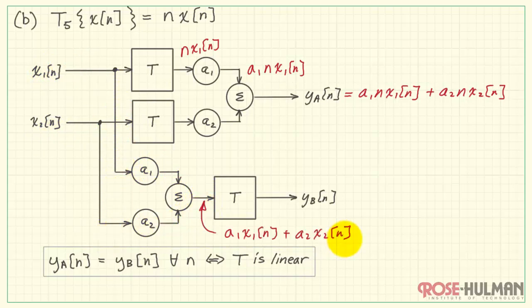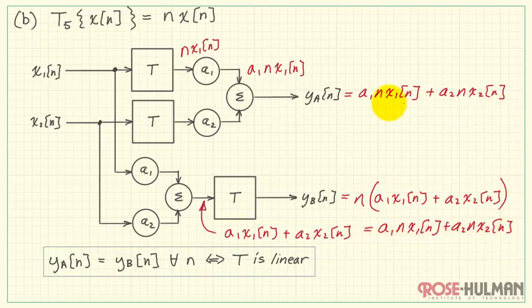We form the new input. Pass it through our system. And we have N times our input signal. Now comparing those two, we find that N can be distributed across the sum. We can also interchange the order of N and the A coefficients. And we do a comparison here and find out that YA and YB are in fact equal. Therefore, T5 is linear.